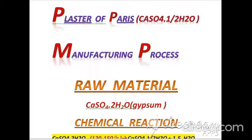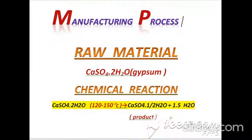In this video, I am presenting a lecture on the industrial manufacturing process of Plaster of Paris. According to raw material, gypsum is used to manufacture Plaster of Paris. According to the chemical reaction, we provide a temperature from 120 to 150 degrees centigrade, and after that, we get Plaster of Paris.